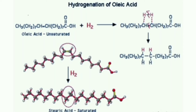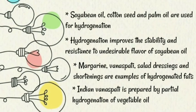Here I have given a picture. From this picture you can clearly see the hydrogenation of oleic acid — when hydrogen is added to oleic acid, the double bonds are replaced and hydrogen is added in that place, and the oleic acid becomes stearic acid and becomes saturated. Soya bean oil, cottonseed oil, and palm oil are used for the hydrogenation process.